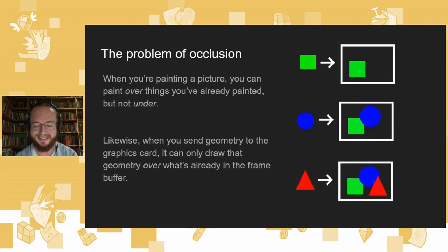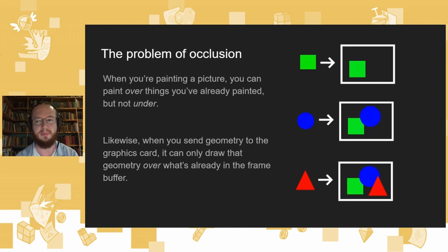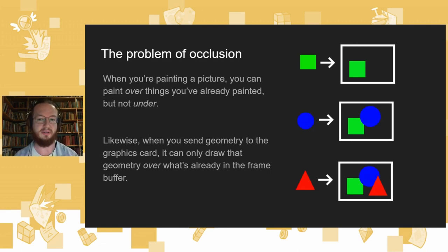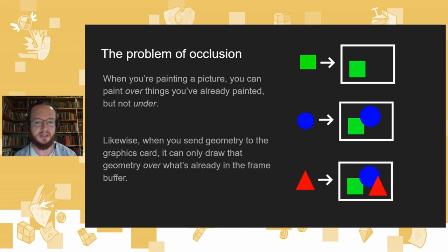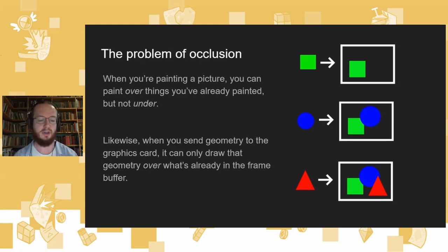I've got this diagram that I stole from my talk last year, slight modifications. If you're painting a picture — like an actual picture with actual paint on a canvas — you can paint over things you've already painted, but you can't paint under them. And it works the same way when you send geometry to the graphics card. When you render a blue circle and you've already rendered a green square, the blue circle copies over the top of what's there already. You can see how in that diagram the blue circle looks like it's in front of the green square. There's no information there about where they actually are in three-dimensional space — it's just by virtue of drawing the blue circle second that our brain looks at that and goes, yeah, it's in front of it, because that's how light works in real life.